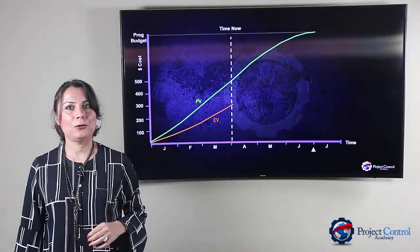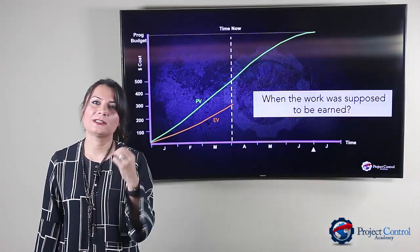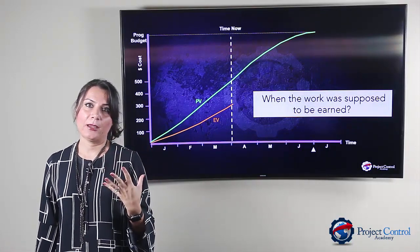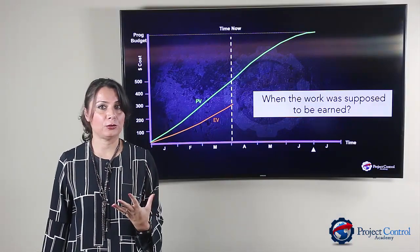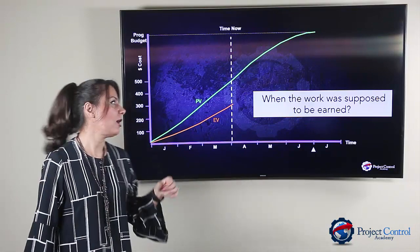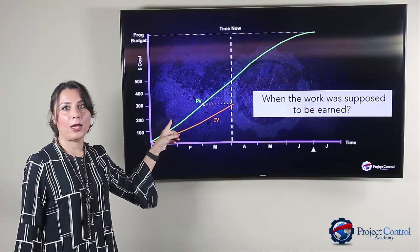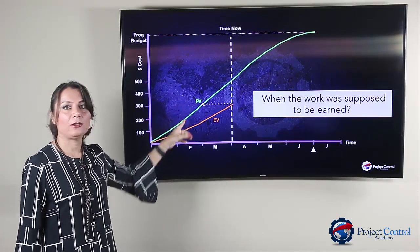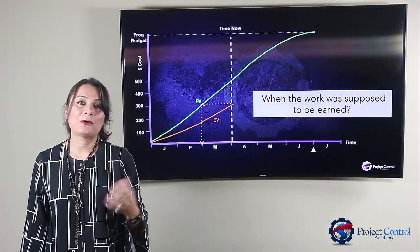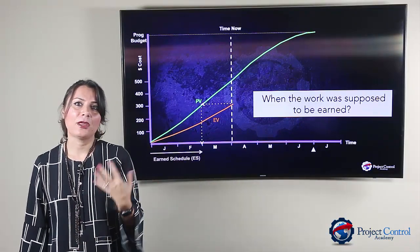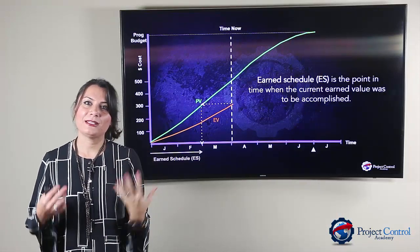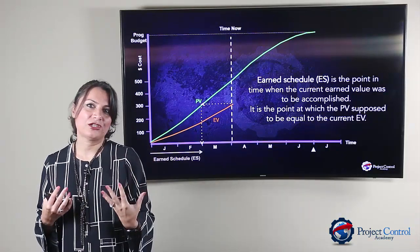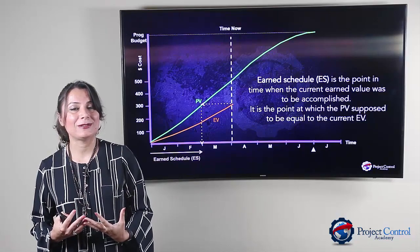To measure Earned Schedule, you need to determine when the work was supposed to be earned. In other words, at what point in time should the current Earned Value have occurred? This is determined by crossing a horizontal line from your cumulative Earned Value to the Planned Value curve, and the intersection of that line with your Planned Value is your Earned Schedule. Therefore, Earned Schedule is the point in time when the current Earned Value was to be accomplished — it is a point at which the Project Planned Value is supposed to equal the current Earned Value.